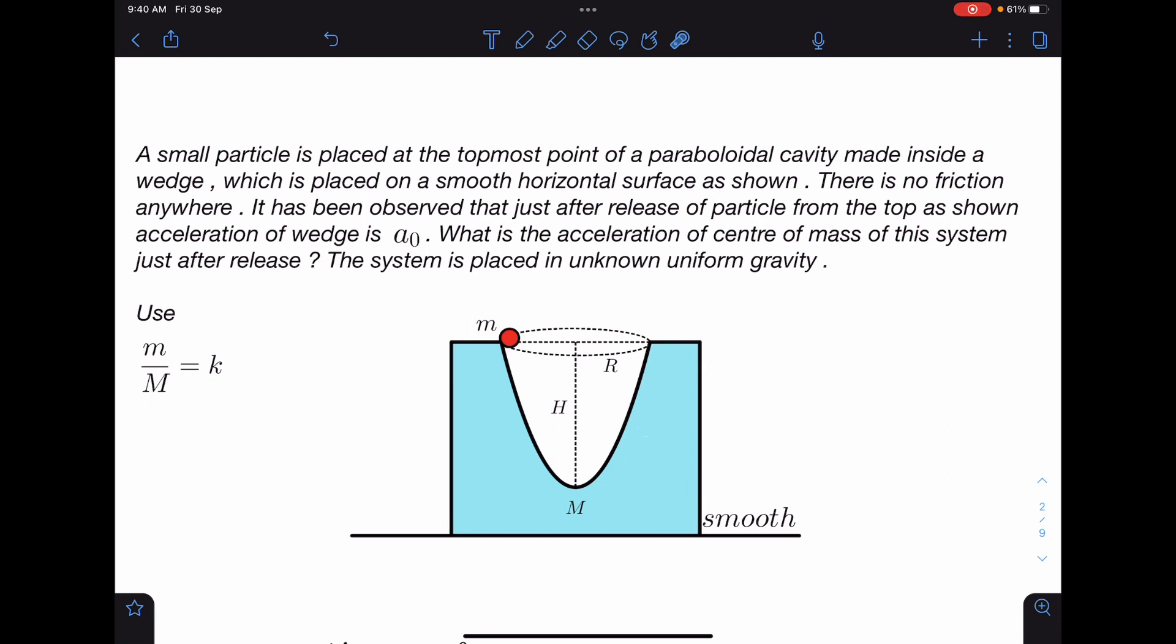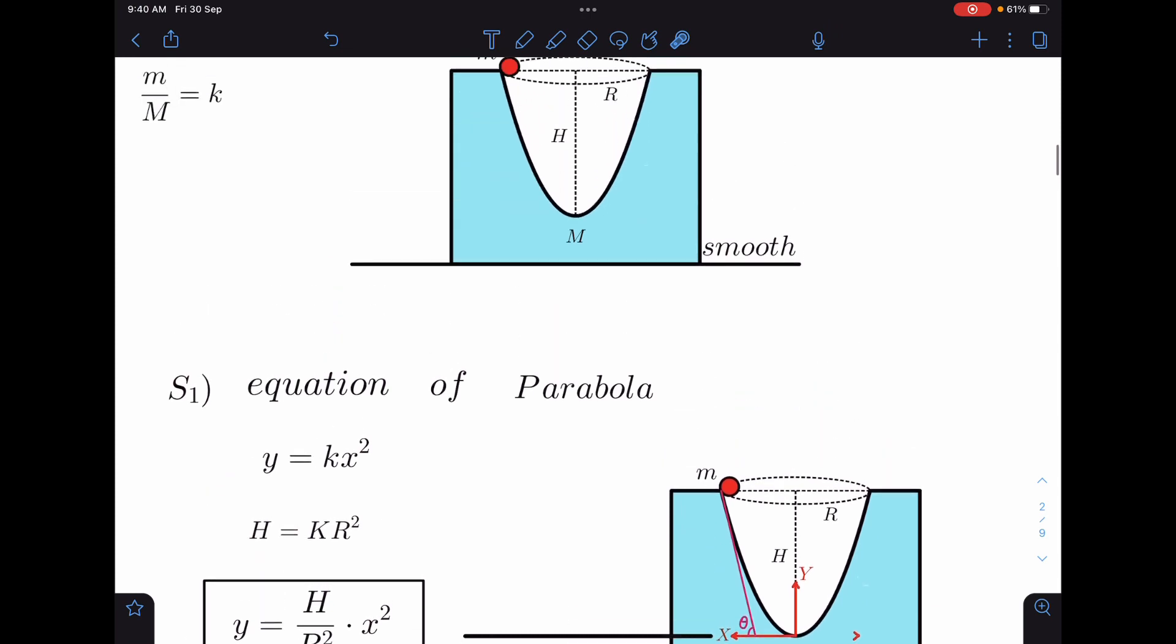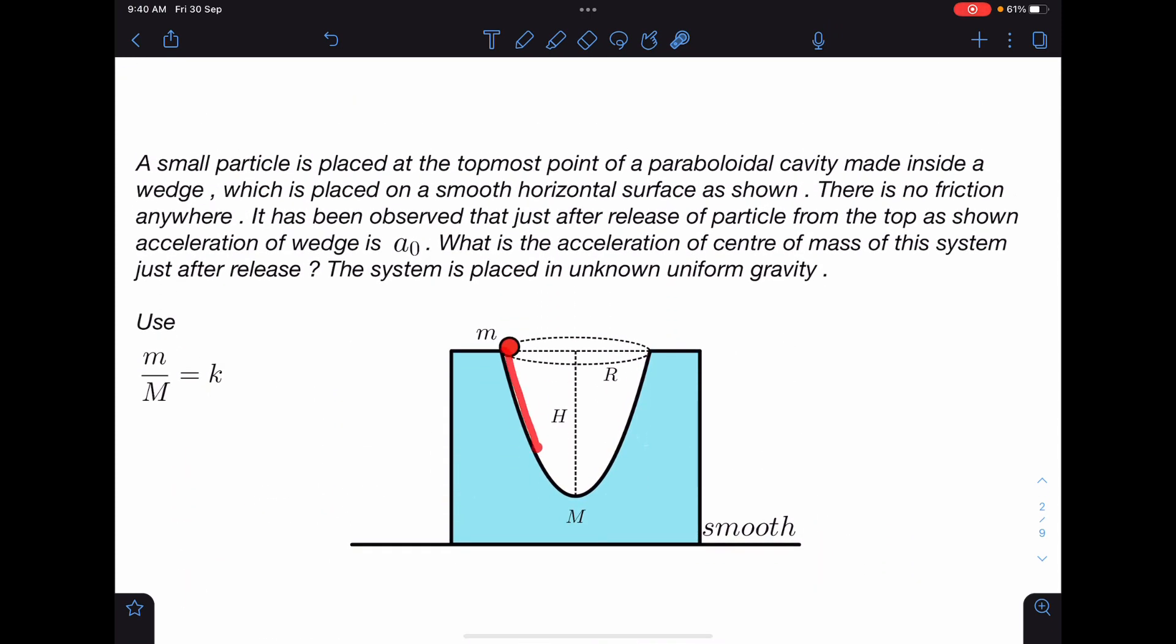The system is placed in unknown uniform gravity. Use m/M ratio as k. Let's discuss step by step. First thing is equation of this parabola.